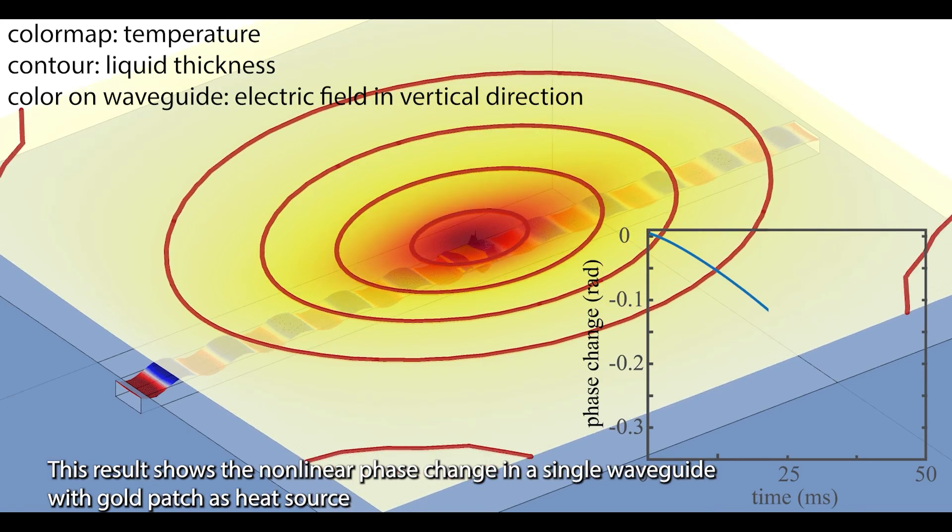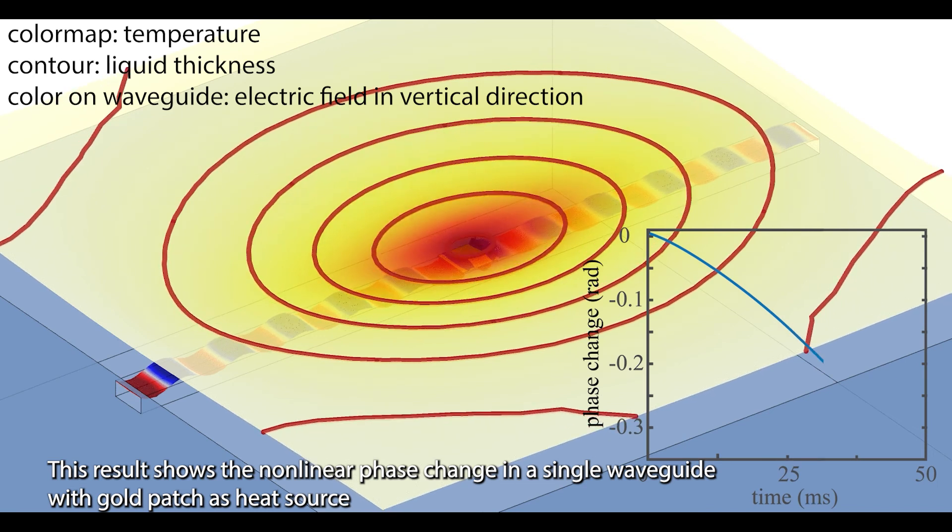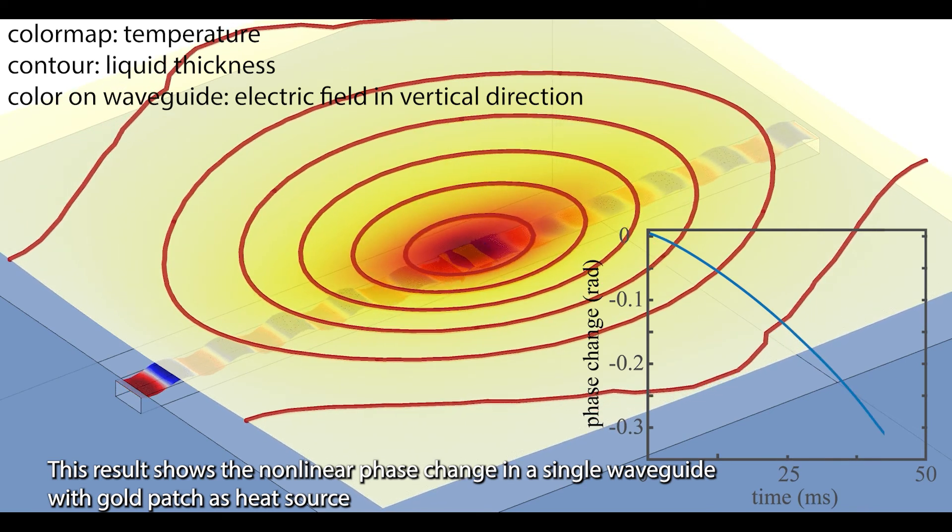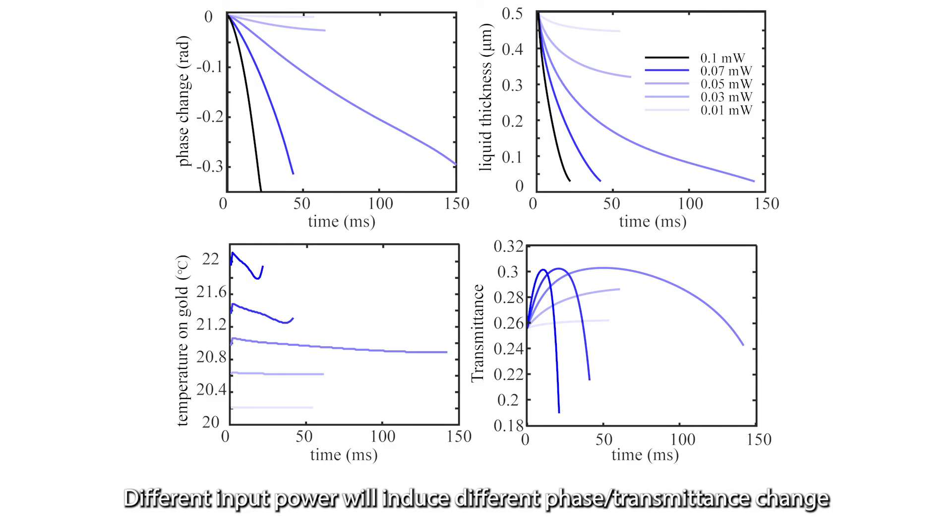This result shows the nonlinear phase change in a single waveguide with gold patch as the heat source. Different input power will induce different phase or transmittance change.